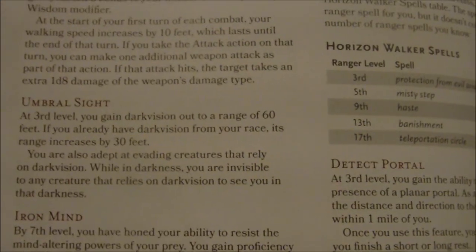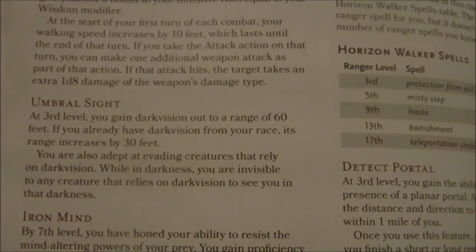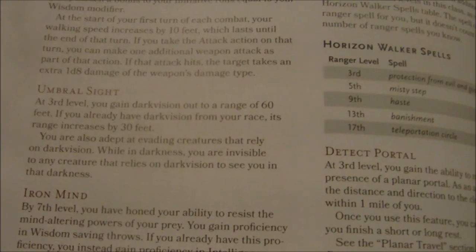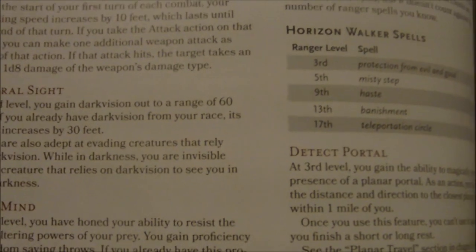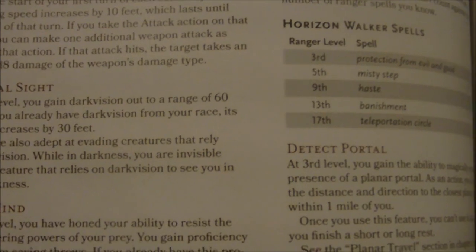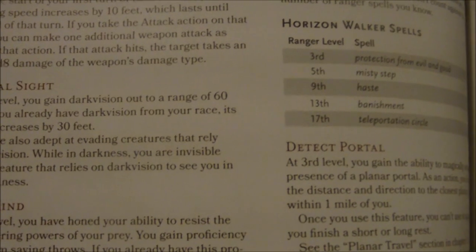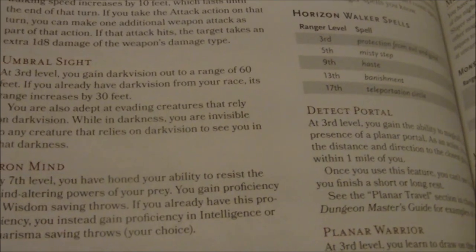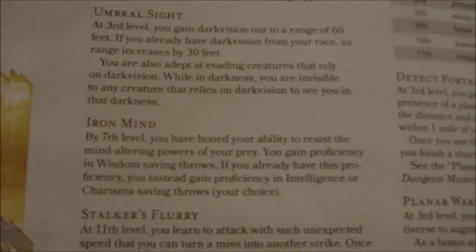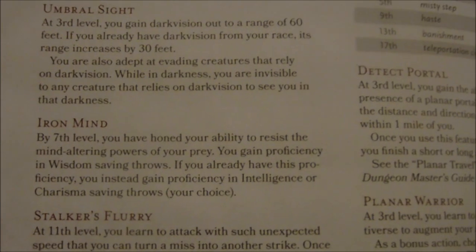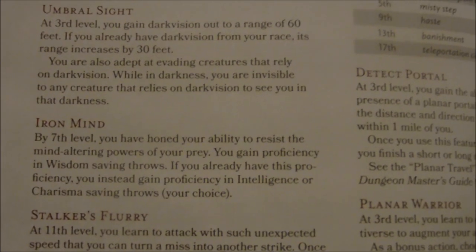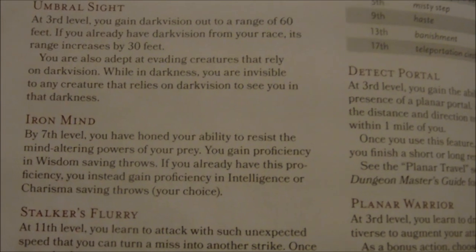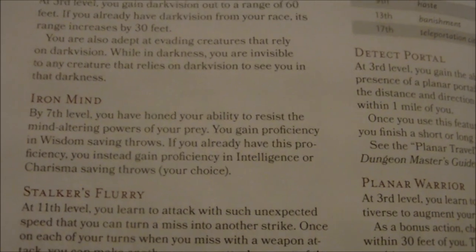Also at third level, you gain Umbral Sight: you gain darkvision out to 60 feet, or if you already have darkvision from your race, it's extended by 30 feet — so 60-foot darkvision becomes 90-foot darkvision. You're also adept at evading creatures that rely on darkvision: while in darkness, you are invisible to any creature that relies on darkvision to see you in that darkness. That's a great way of ambushing things like drow or other Underdark races. At seventh level, you get Iron Mind: you've honed your ability to resist mind-altering powers. You gain proficiency in Wisdom saving throws, or if you already have that proficiency, you instead gain proficiency in either Intelligence or Charisma saving throws of your choice.